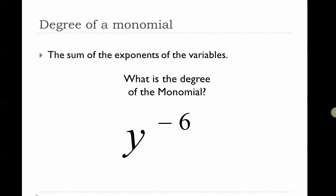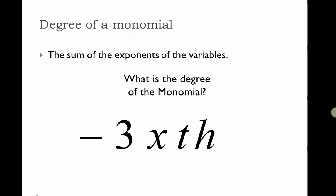Now, you better not say negative 6 for this next one — because this is not a monomial. It has a negative exponent, and a negative exponent is not a whole number, so this is not a monomial at all. Next: negative 3xth. The exponent of x is 1, the exponent of t is 1, the exponent of h is 1. The degree of this monomial is 3 — 1 plus 1 plus 1 is 3. We don't pay attention to the number. It is a monomial because all the exponents are whole numbers, so this is a third degree monomial.